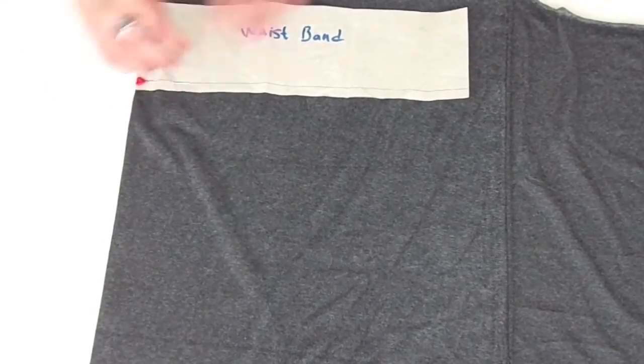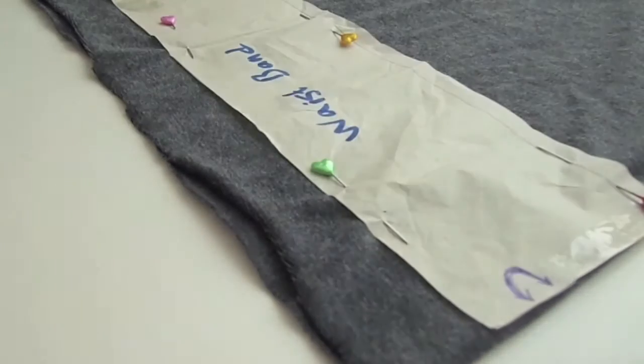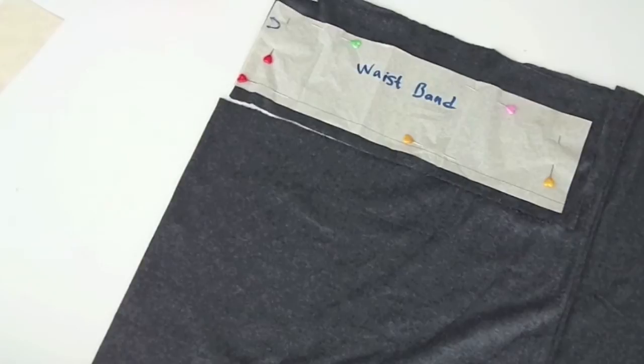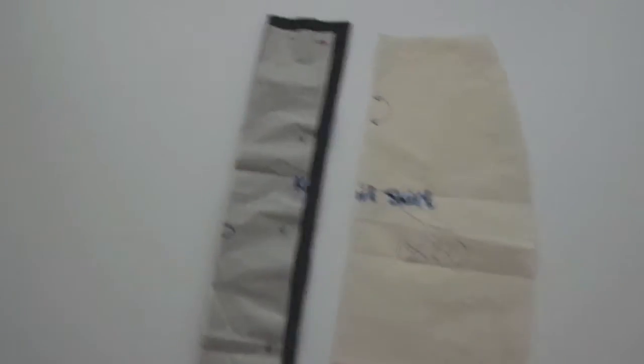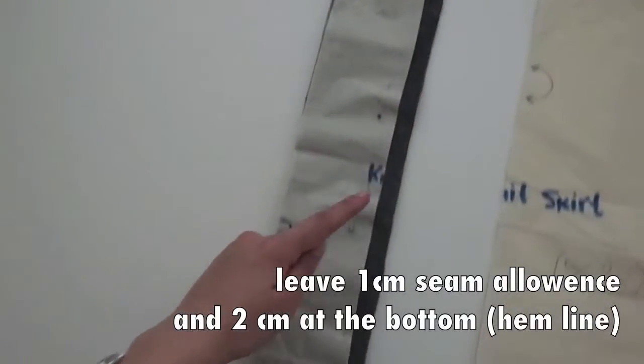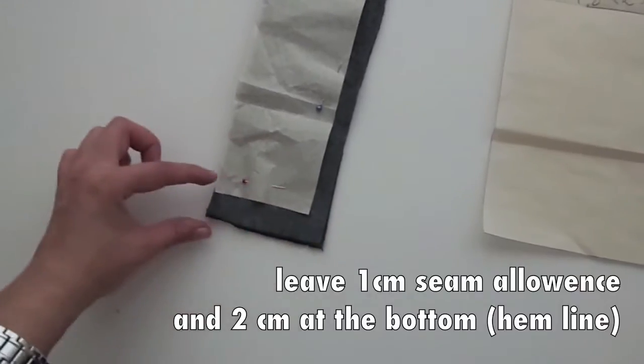For the rest of the skirt, I'm using jersey fabric. So we need to cut the waistband and we need to cut the middle part we had cut out of the pattern before, like so. Just leave one centimeter seam allowance and two at the bottom for the hemline, and we need two of these pieces.